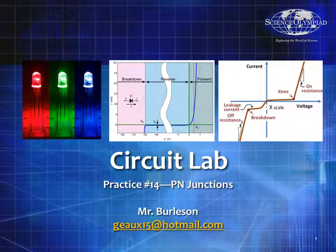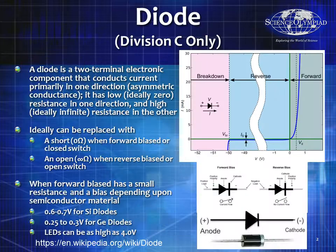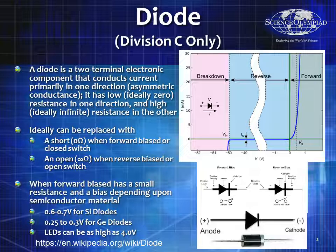Welcome to Circuit Lab Practice number 14: PN Junctions. My name is Mr. Burleson, you can reach me at geaux15 at hotmail.com. We talked about diodes before and how it's a two-terminal electronic device that allows current to be conducted in one direction normally. We talked about how an ideal diode has zero forward bias resistance and it also has infinite reverse bias resistance.